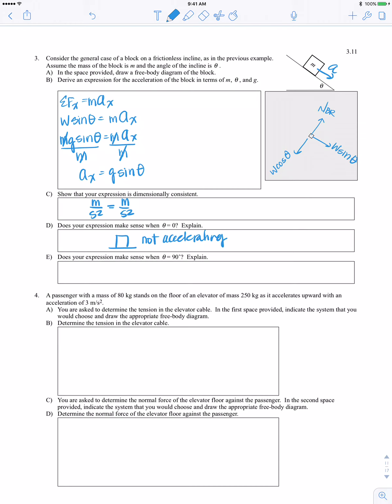Does your expression make sense when theta is 90? Yes, when theta is 90, sine of 90 is 1, so you get acceleration equal to gravity. A 90 degree angle in that ramp would mean the block is just falling, like free fall, so yes it should have an acceleration equal to gravity.